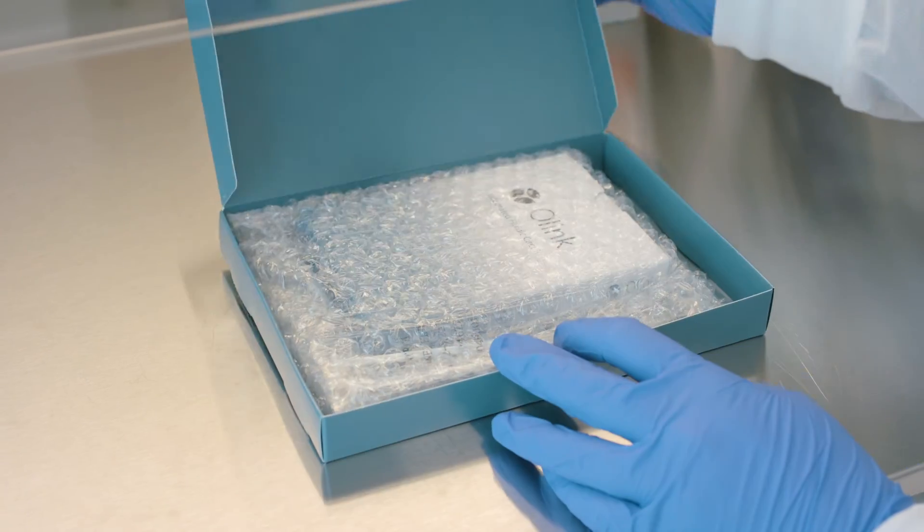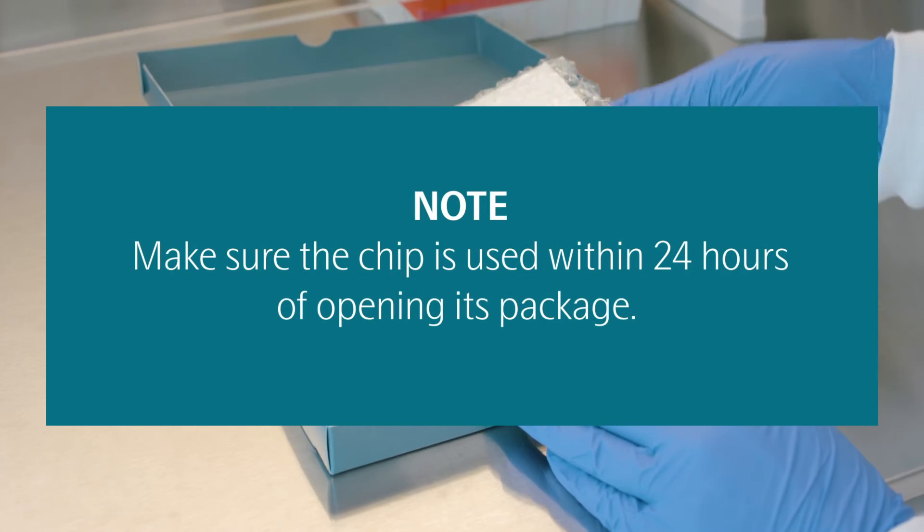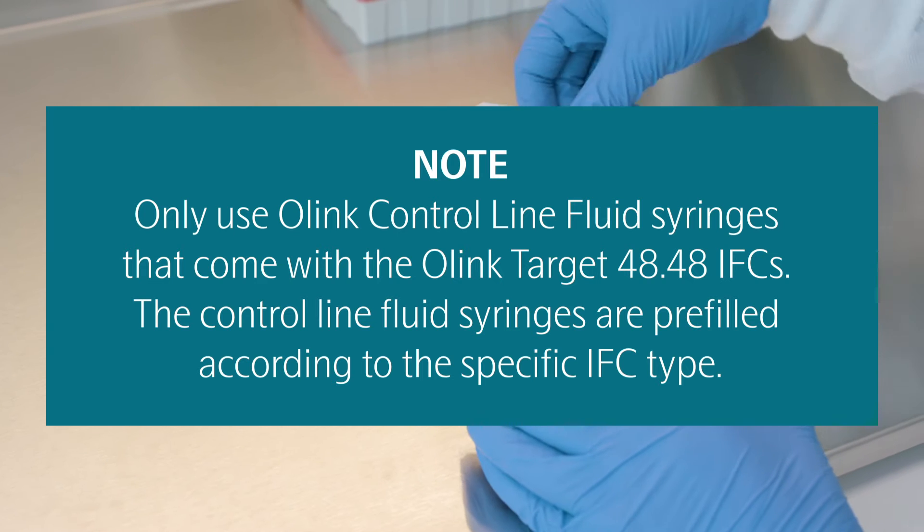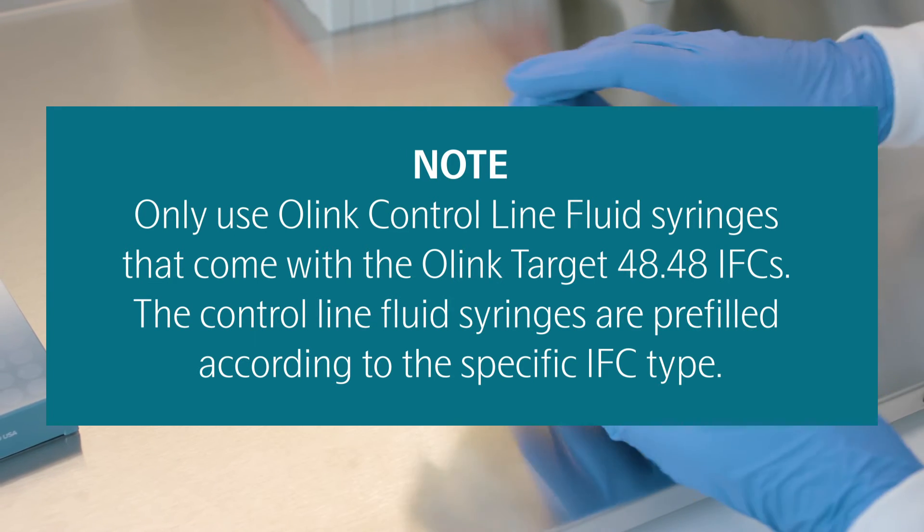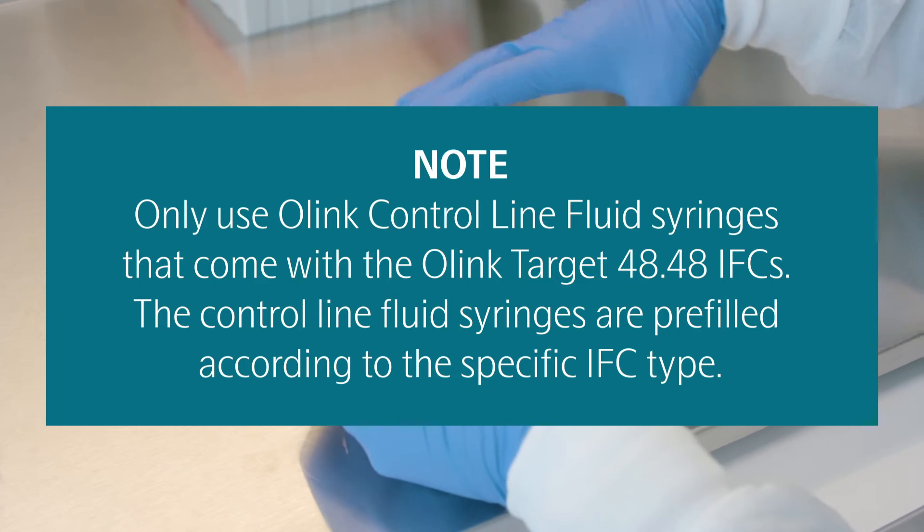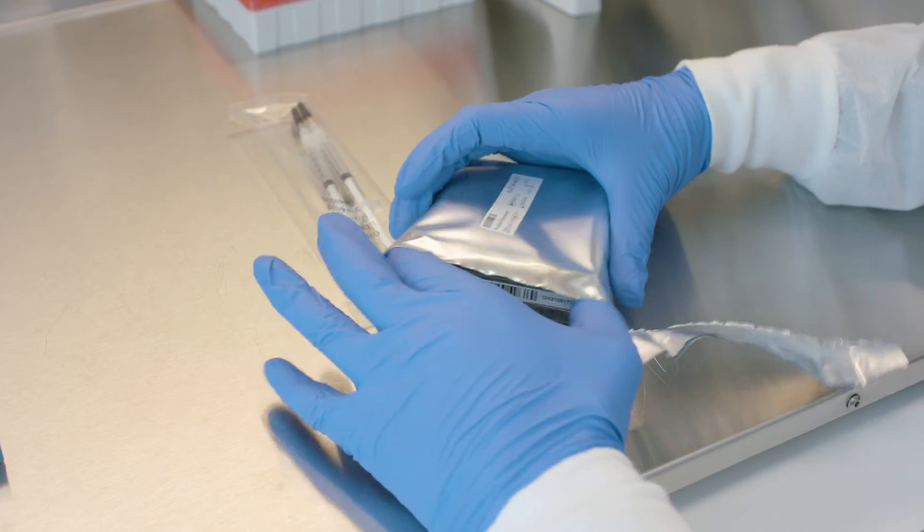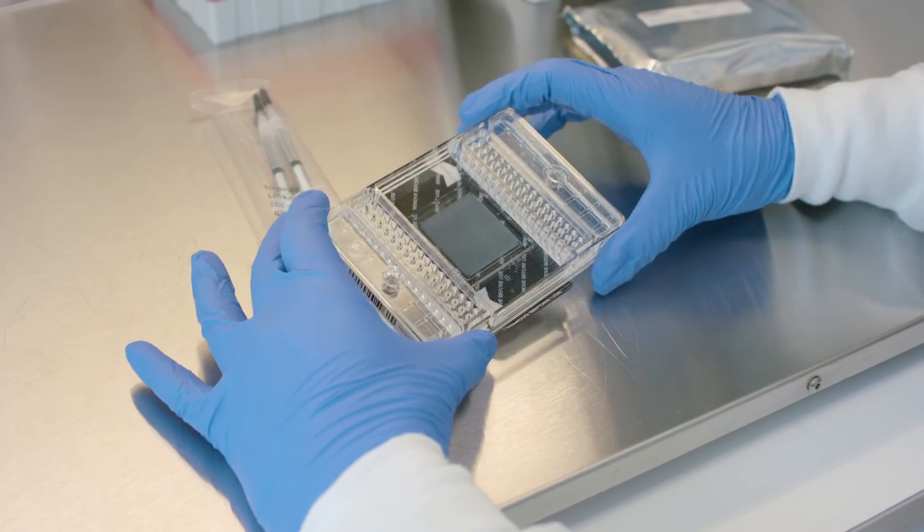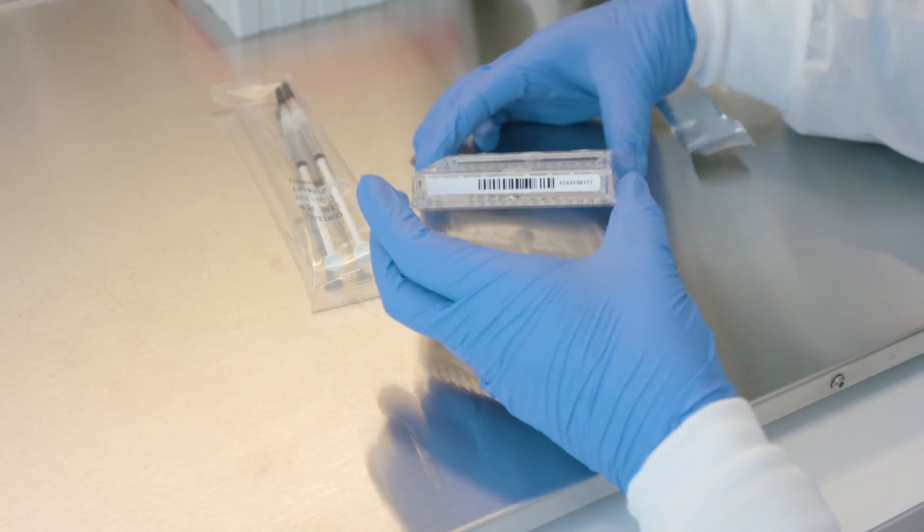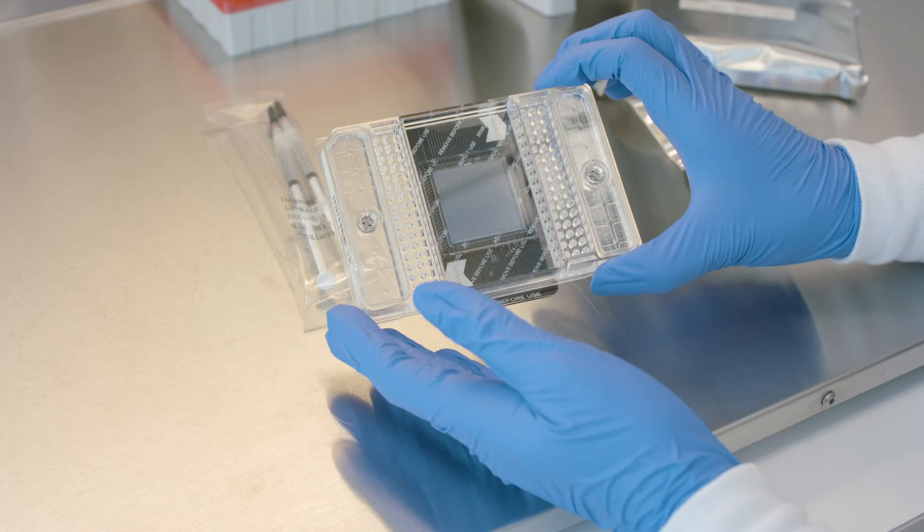Make sure the IFC is used within 24 hours of opening its package. Only use control line fluid syringes that come with the Olink 4848 IFCs. The control line fluid syringes are pre-filled according to the specific IFC type. Begin by unpacking the control line fluid syringes and the IFC from the box and foil envelope. Inspect the chip for any visible damage, and ensure that the barcode label is intact, and that the chip surfaces are clear of particulates before use.